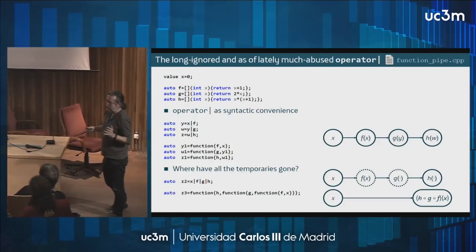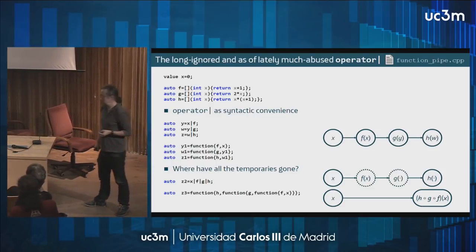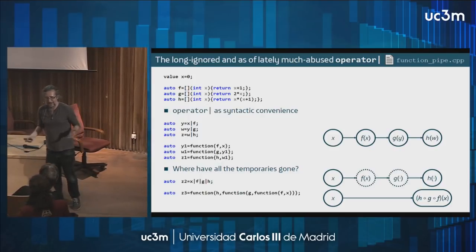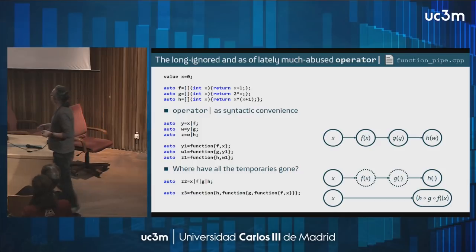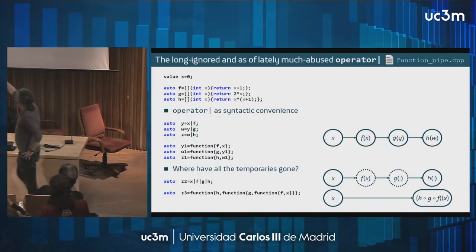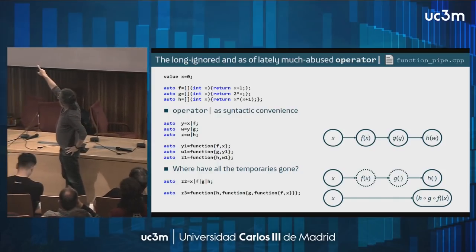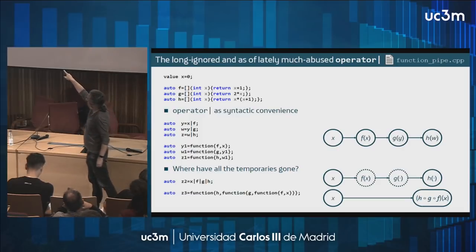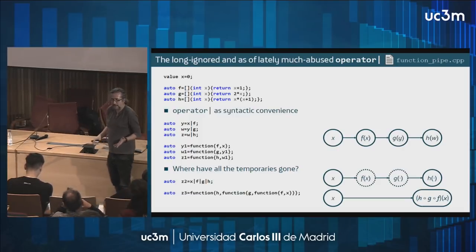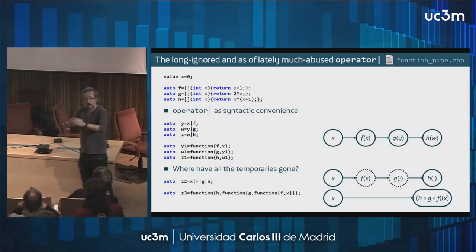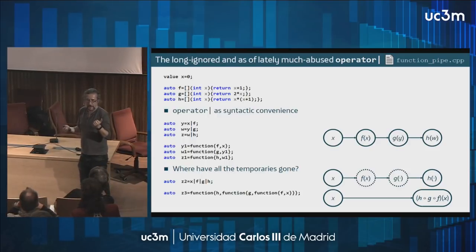The final part is operator pipe. Operator pipe used to be something nobody thought about, but now everyone's using it for ranges and everything. It's in principle just syntactic sugar. When I write auto y = x | f(w, y) | g etc., what I'm doing is equivalent to the three lines below: if I'm piping a function to a node it's just like creating a node with that function dependent on the node I refer to.